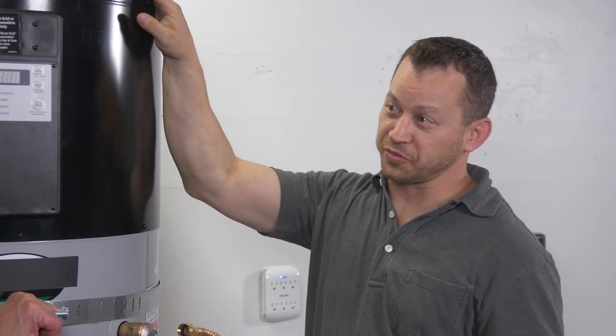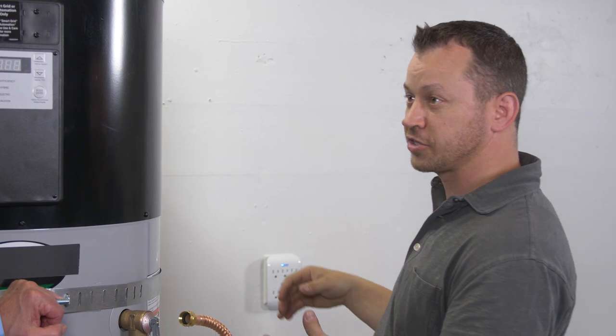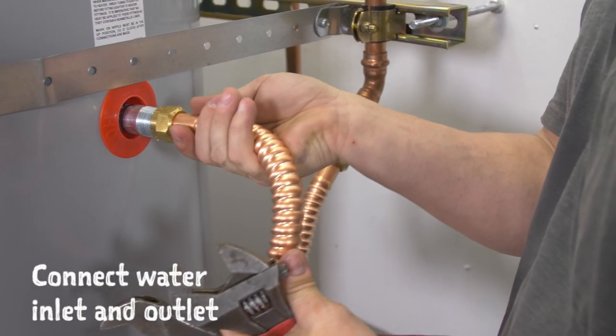Now that we've finished up with the condensate drain, the next step is to make our final connection with the water lines, the inlet and the outlet.